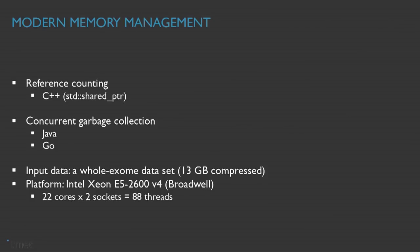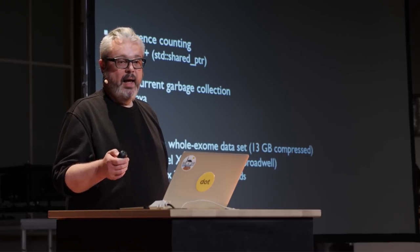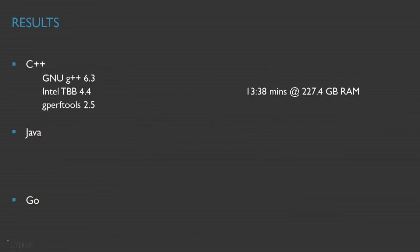So here are the results. We used an input dataset which is a Holixome dataset — 13 gigabytes of compressed data. We ran on a two-socket machine with 22 cores each. For C++, with those tools, we got 13 minutes 38 seconds at 227 gigabytes of RAM.